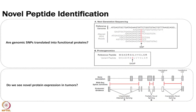I am going to spend most of the time talking about variant peptide identification. The questions we want to answer are: whether or not genomic SNPs are translated into functional proteins — when we have a single nucleotide polymorphism, does it make it to the protein level? And also, do we see novel protein expression? I am going to be specifically looking at tumors, but you could apply this to whatever you are studying. In tumors, you see more of this novel expression, so we pay a lot of attention to it.